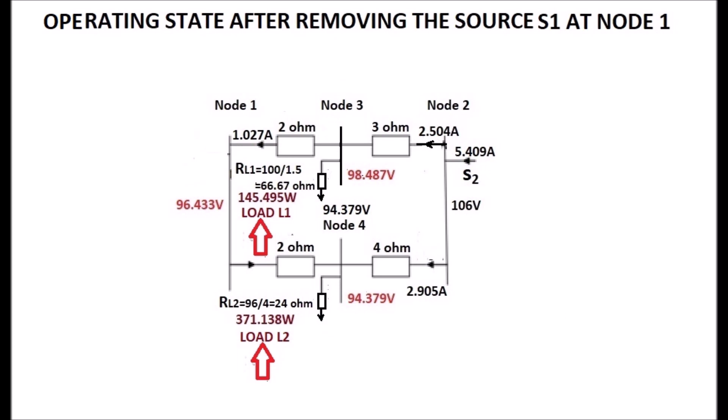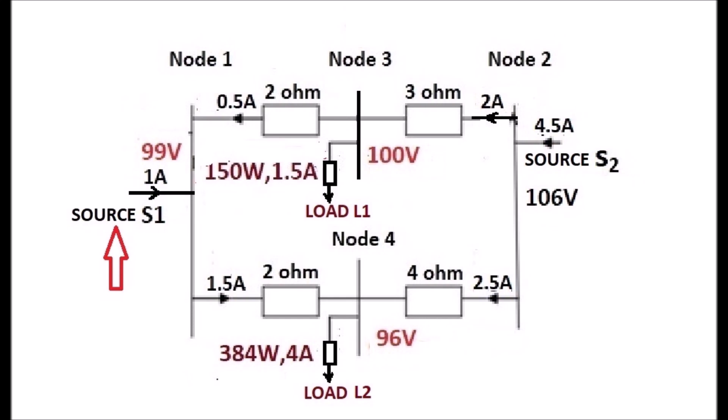If the source S1 is connected at node 1, the current from 3 to 1 is reduced to 0.5 ampere, which indicates the source S1 sends current 0.527 ampere, that is the difference of 1.027 minus 0.5. This 0.527 ampere is from node 1 to node 3.